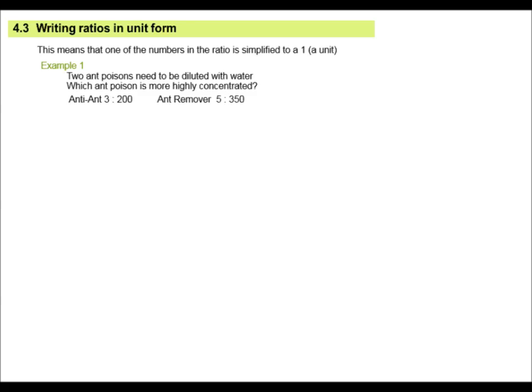Writing ratios in unit form. Well, unit form means per one. Unit is one. Two ant poisons need to be diluted with water. Which ant poison is more highly concentrated? Well, it's very difficult to decide from the ratios that we have. We have 3 to 200 and 5 to 350. So what we do is we make this one to something and we make this one to something. So if I have one millilitre of ant poison, how much water do I have? We are making it a unit.